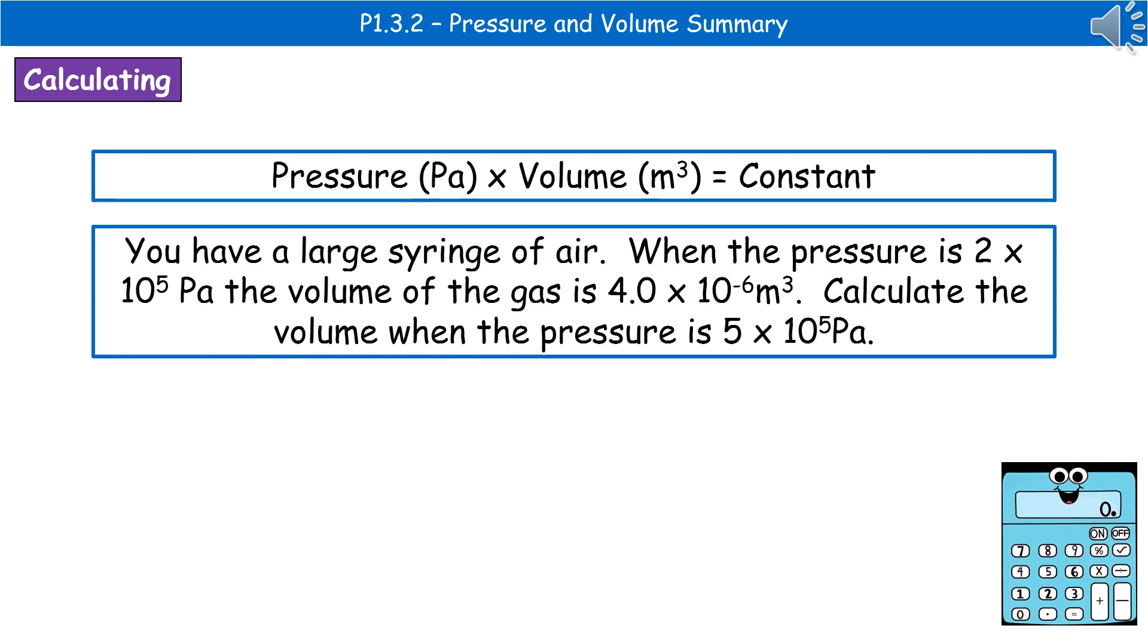The next thing we need to be able to do is to actually carry out calculations involving pressure and volume. So this equation is one you don't have to learn. Pressure times the volume is a constant, so by a constant we mean something that's not going to change. So to give you an example of a kind of question we could get here, you have a large syringe of air when the pressure is 2 × 10⁵ pascals. The volume of the gas is 4.0 × 10⁻⁶ meters cubed. Calculate the volume when the pressure is 5 × 10⁵ pascals.